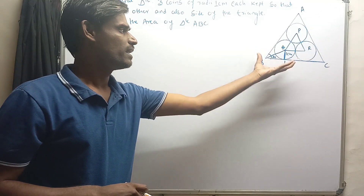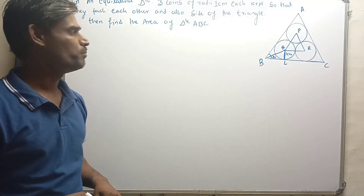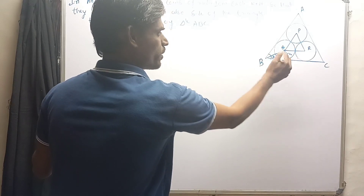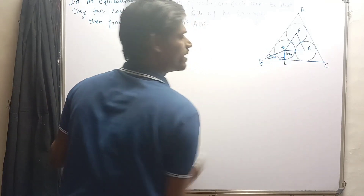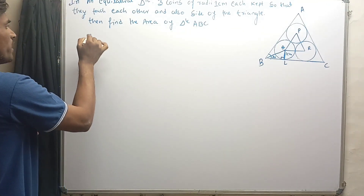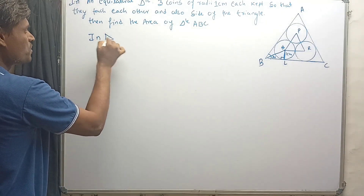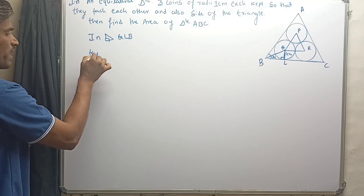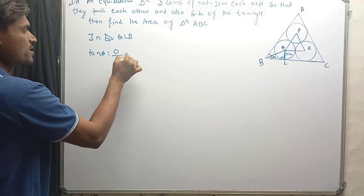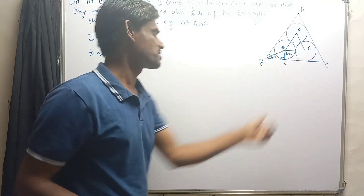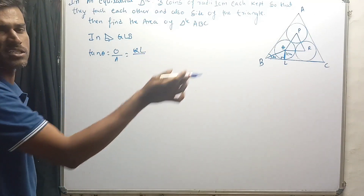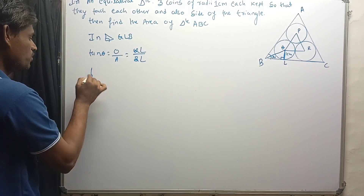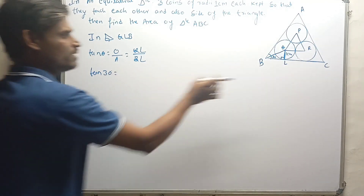With the help of this, let's try to find out the length of BL. We know that BL is the tangent to the circle, so it makes a right angle with the radius. In right angle triangle QLB, we can write: tan θ = opposite side / adjacent side. The opposite side is QL and the adjacent side is BL. We know that θ = 30 degrees, so tan 30° equals the length of QL.